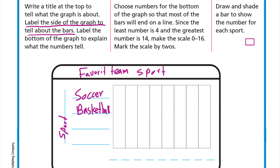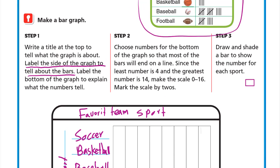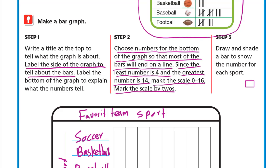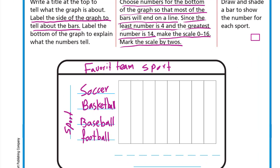We continue listing the sports: baseball and football. Step number two: choose numbers for the bottom of the graph so that most of the bars will end on a line. Since the least number is four and the greatest number is fourteen, we make the scale from 0 to 16 and mark the scale by twos.